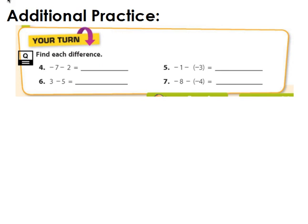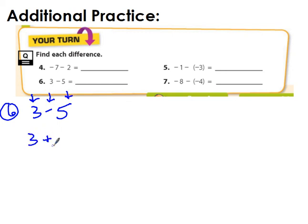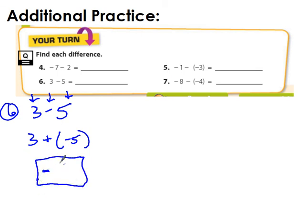For number six: 3 minus 5. I'll use keep, change, change — also known as add the opposite. Keep the 3, change this to an addition symbol, and change positive 5 to negative 5. Now I follow addition rules: different signs means my answer is negative. Negative 5 is bigger than 3, so I have more negatives than positives. Five minus three is two, giving me negative 2.